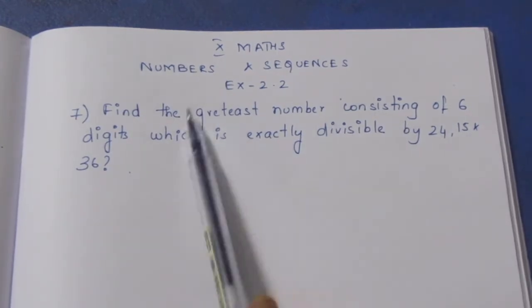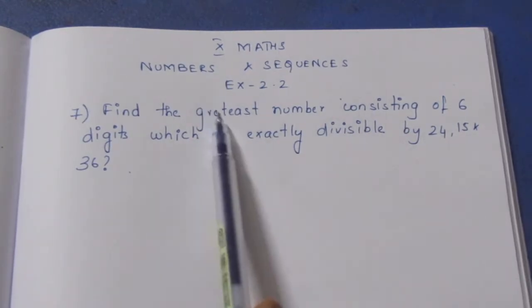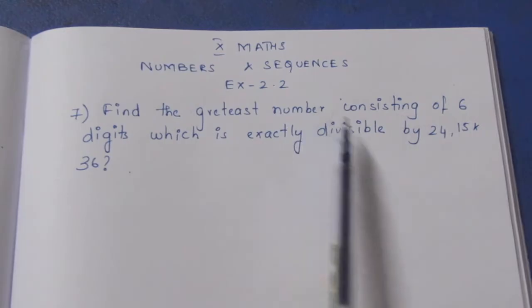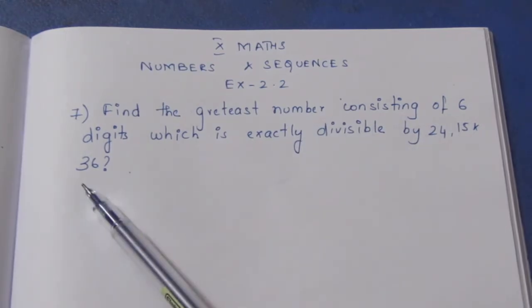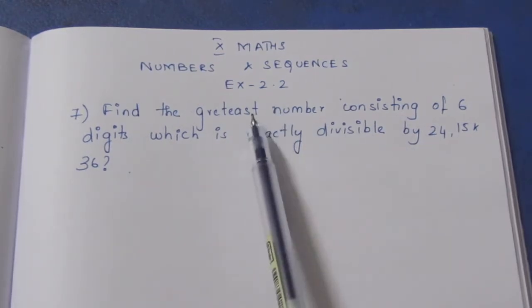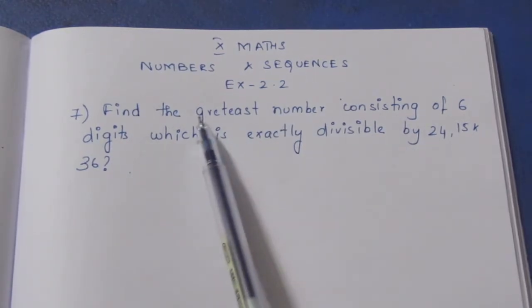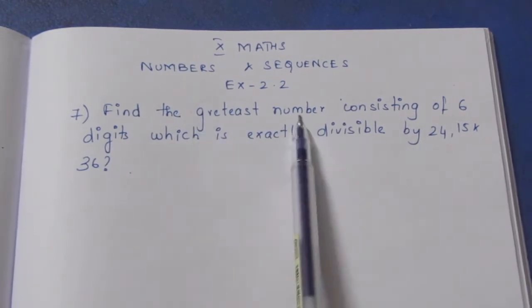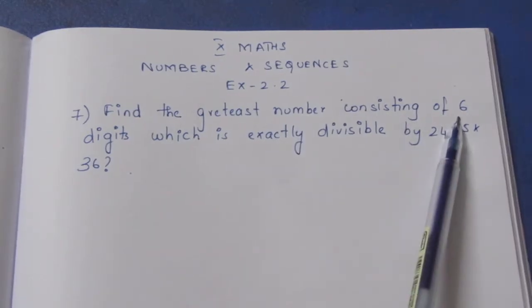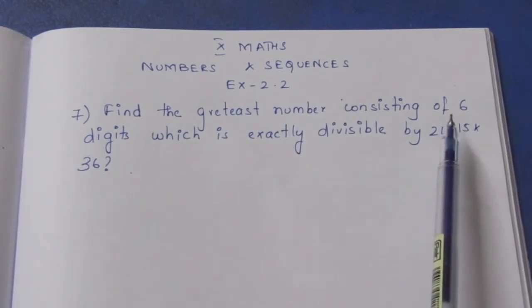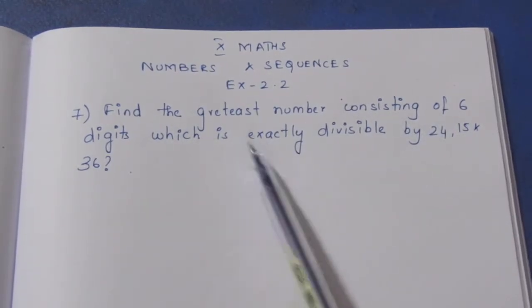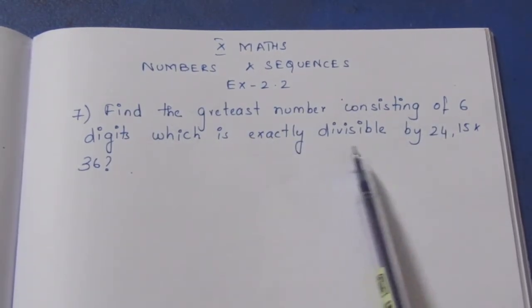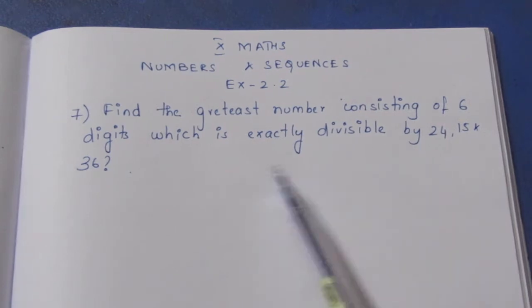We need to find the greatest 6-digit number that is exactly divisible by those three numbers. The greatest 6-digit number is 999999.